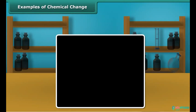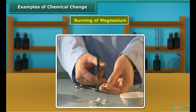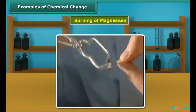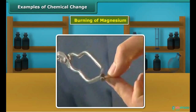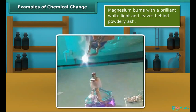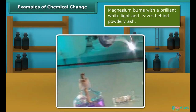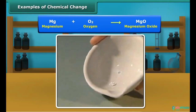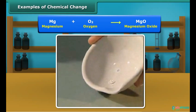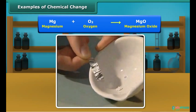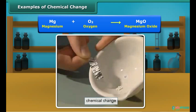Take a small ribbon of magnesium and bring its tip near a flame. It burns with a brilliant white light and leaves a powdery ash called magnesium oxide. This ash has different properties than magnesium; therefore, burning of magnesium is a chemical change.